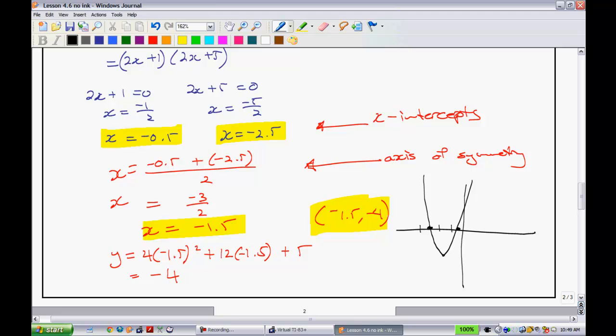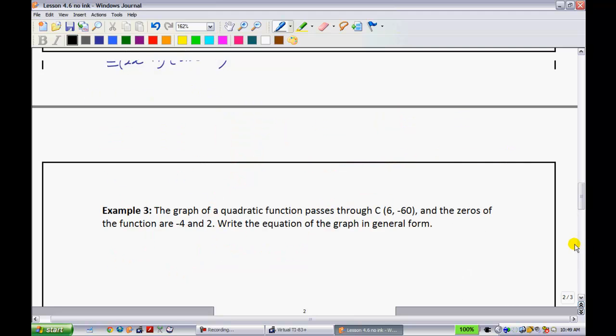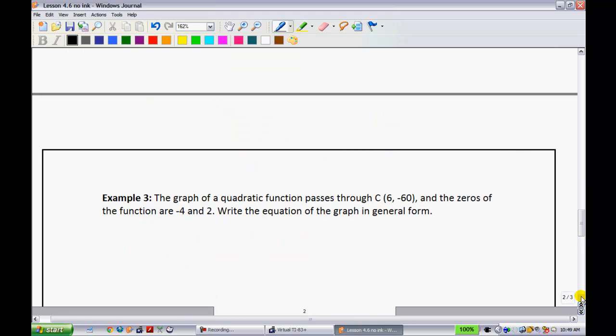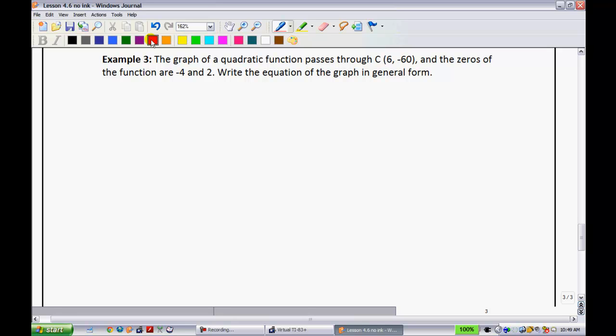Our last example is kind of an easy one, not too much longer here. Example 3. The graph of a quadratic function passes through point C, and C is located at (6, -60). And they tell you the zeros of the function are -4 and 2.